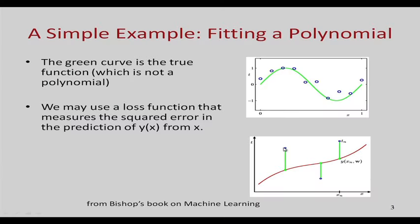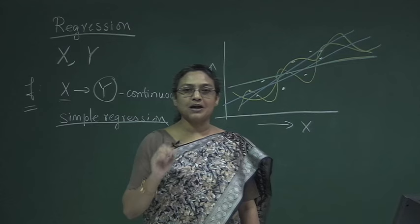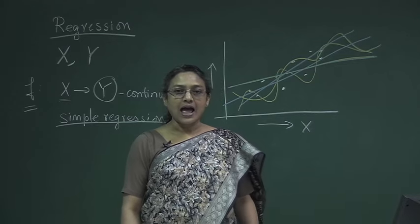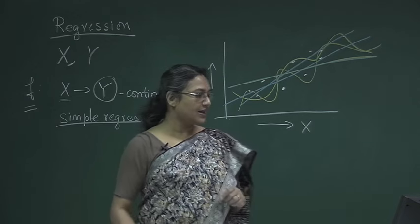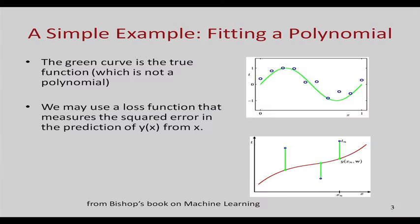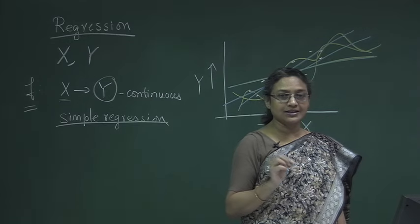One of the ways we can measure how good the line is, is to define the error of the line. We can find the distance of each point from the red line and take the squared distance, then take the sum of squared errors. The sum of squared errors is one measure of error and is one of the popular measures. We could try to find that function for which this sum of squared errors is minimized, assuming the function comes from a particular class — linear, quadratic, etcetera.